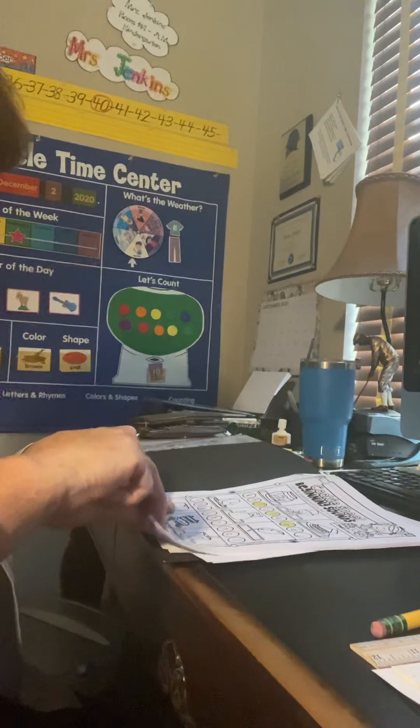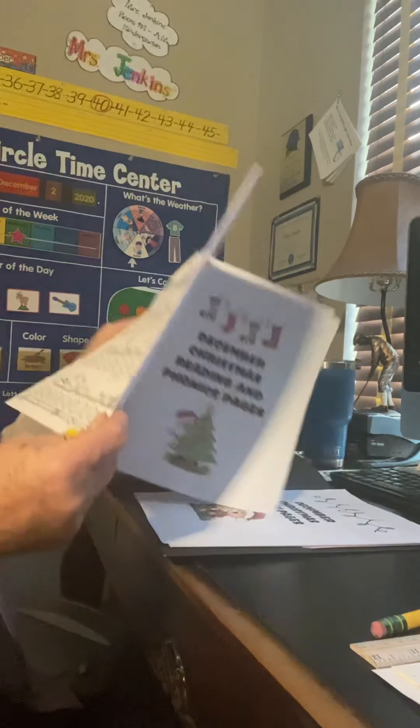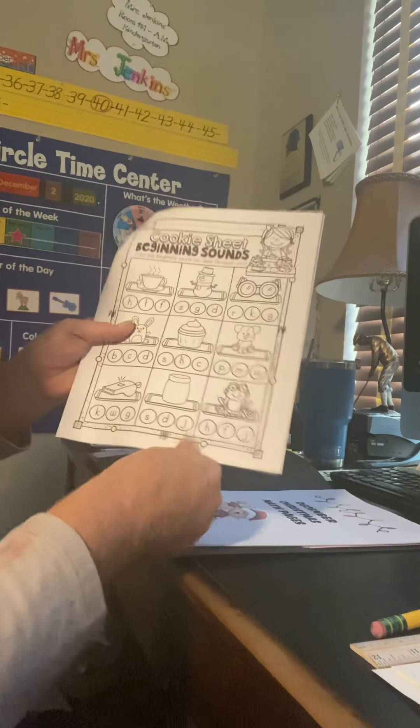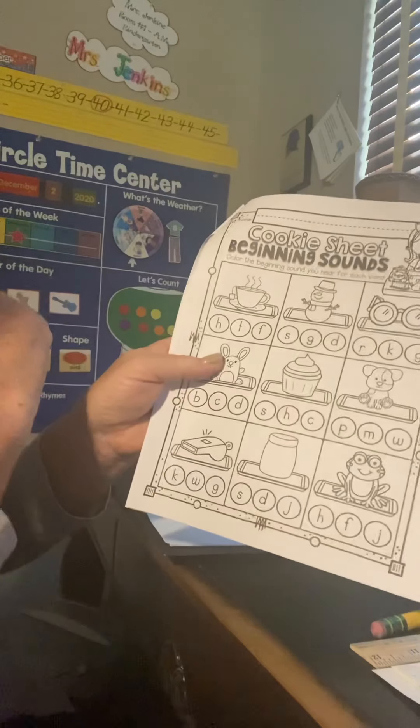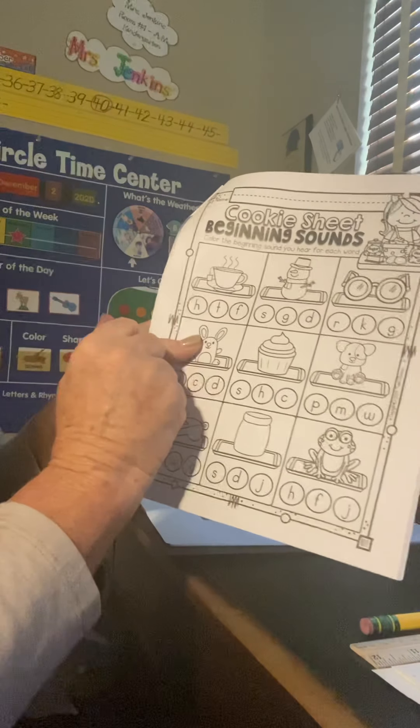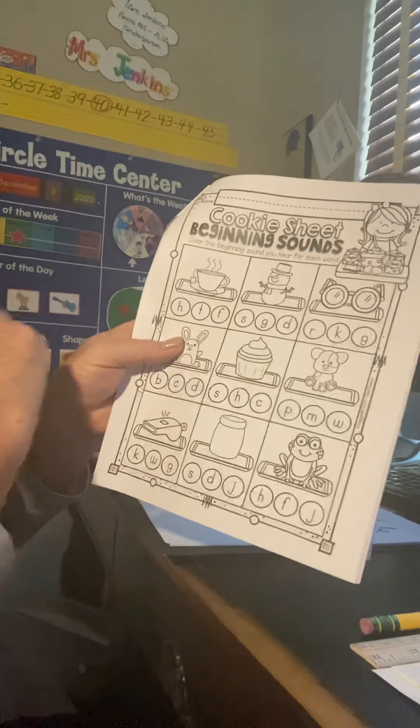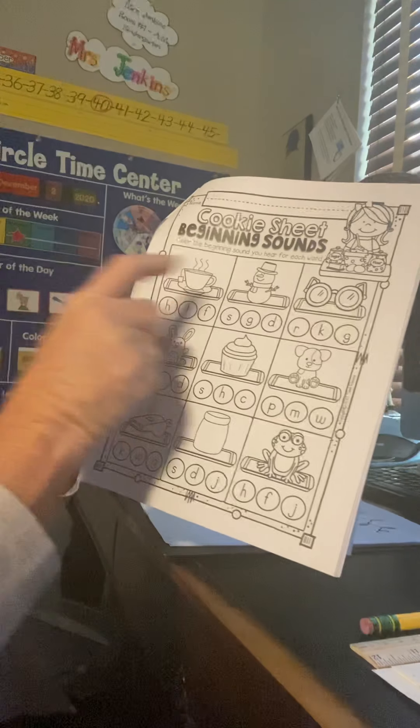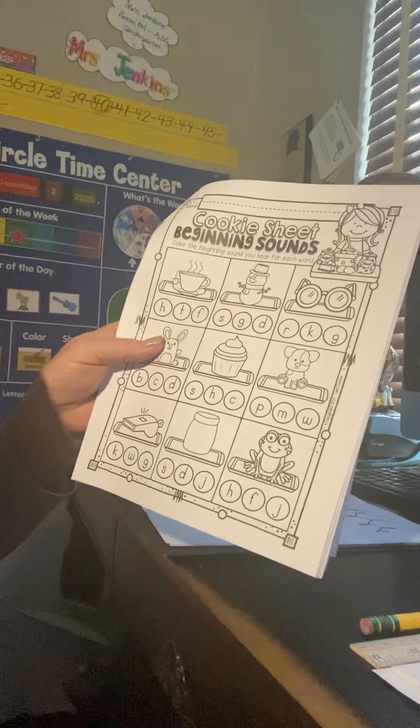Let's, we better check out these pictures in case there's some tricky ones. There's a cup, a steaming cup. Now you might think it's a cup of coffee, but I see the little tea bag here. It's tea, tea. That's easy, right? Snowman. See how I'm trying to isolate the sound? Snowman.